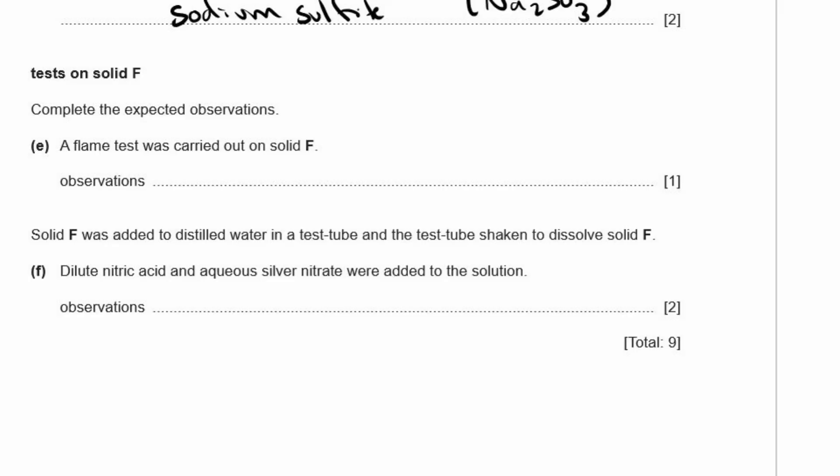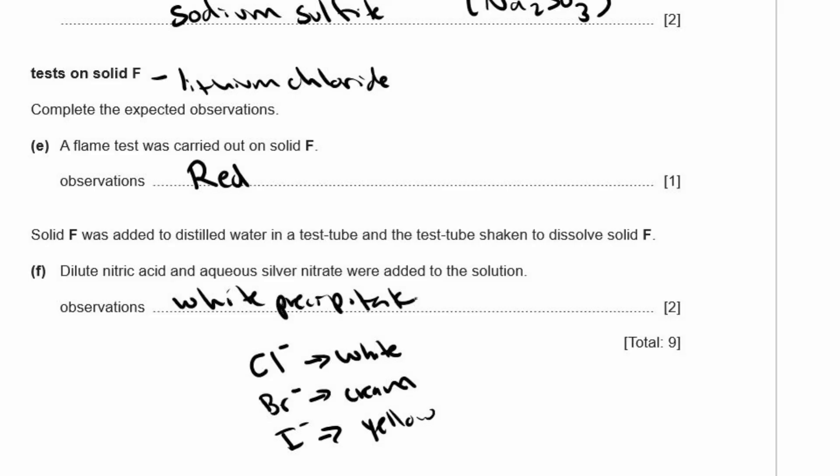Tests on solid F. Okay, so solid F, remember, as it said at the beginning of the question, this is lithium chloride. Okay, so completely expected observations. A flame test was carried out on solid F. So the flame test for lithium is it turns red. It's a nice, pretty red. Solid F was added to distilled water in a test tube, and the test tube was shaken to dissolve solid F. So it makes solution F. Dilute nitric acid and aqueous silver nitrate were added to the solution. Okay, so that is the test for chloride ions give you a white precipitate. A bromide ion gives you a cream precipitate. And an iodide ion gives you a yellow precipitate. So this is lithium chloride. It will be a white precipitate. There we go.